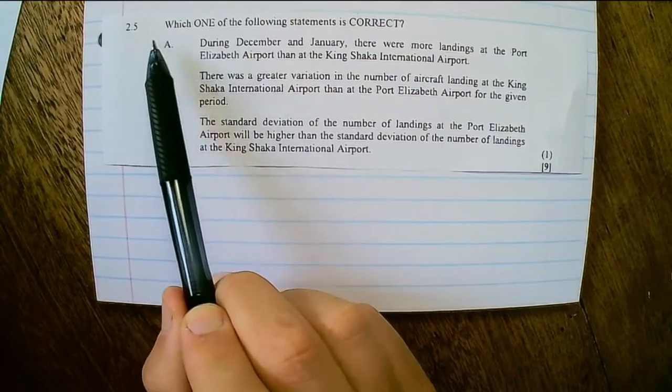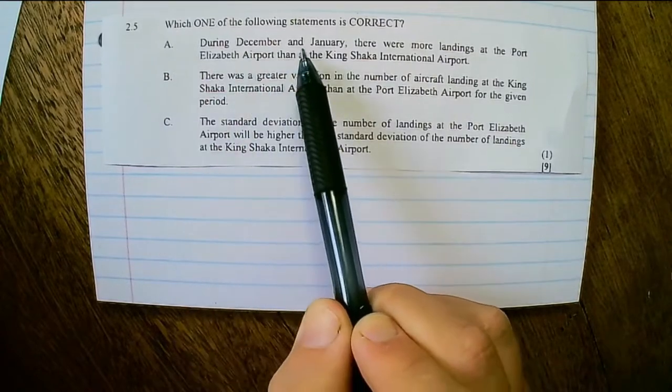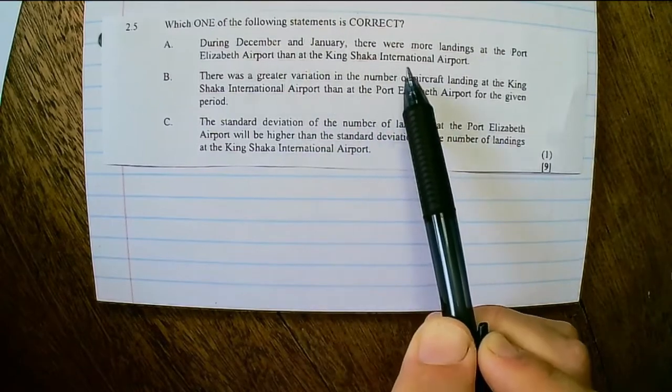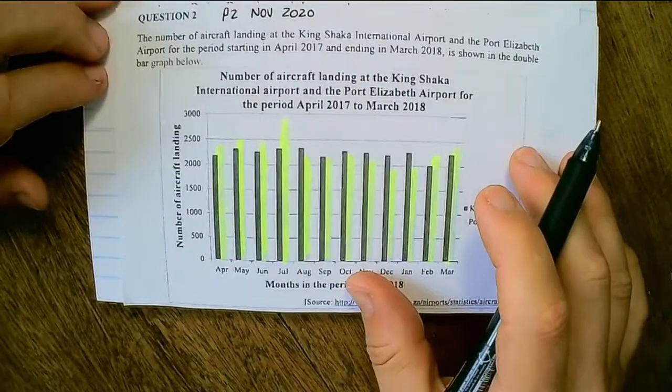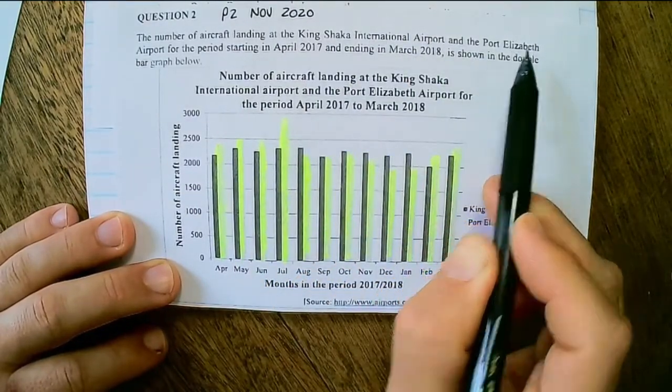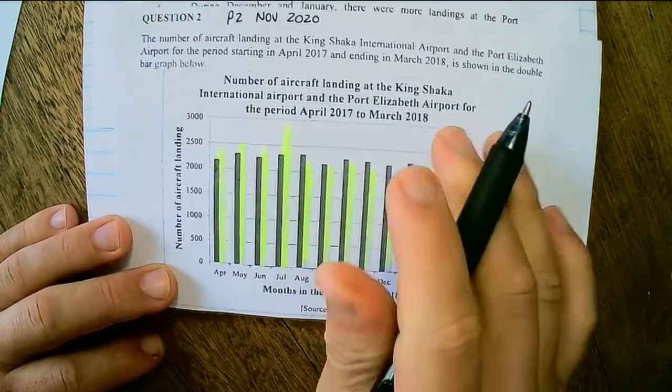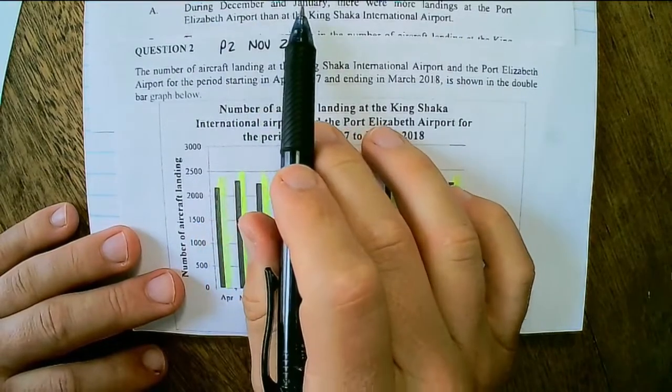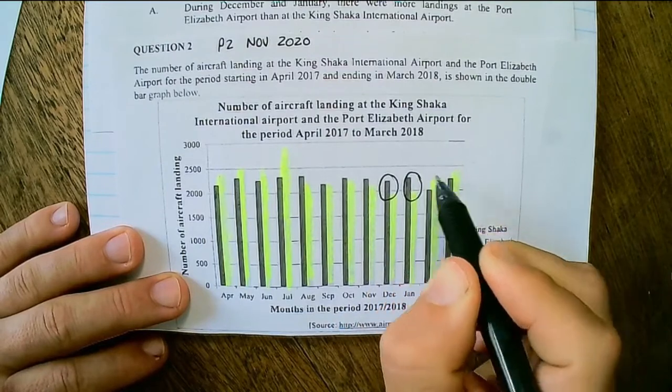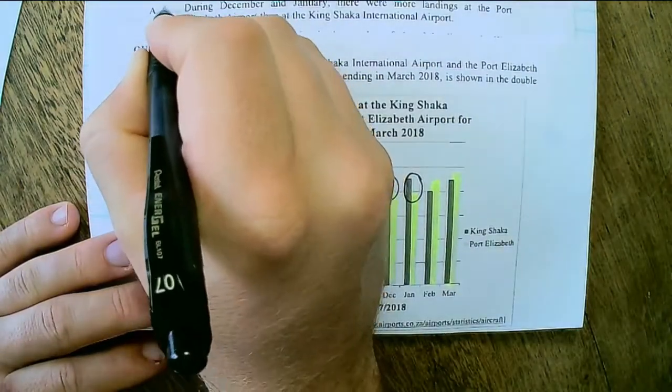Question 2.5: Which one of the following statements is correct? Option A: During December and January, there were more landings at the Port Elizabeth airport than at King Shaka airport. On the bar graph given, it is King Shaka and then Port Elizabeth. We're speaking about December and January. Looking at December and January, we can see that Port Elizabeth had less landings. So A is false.